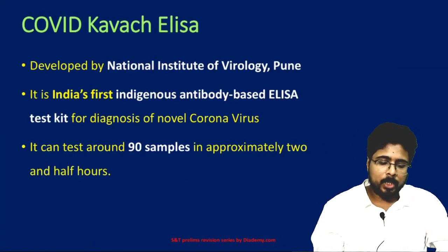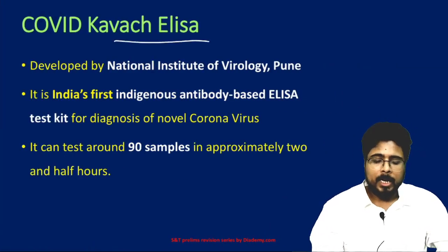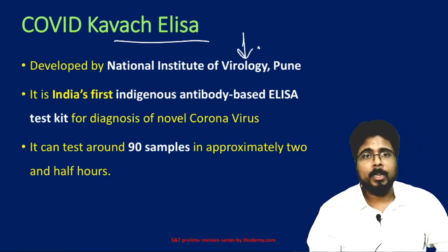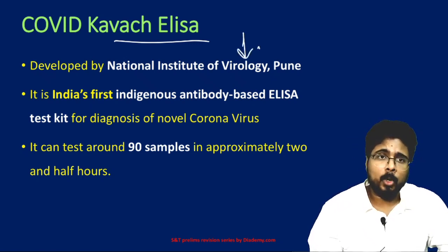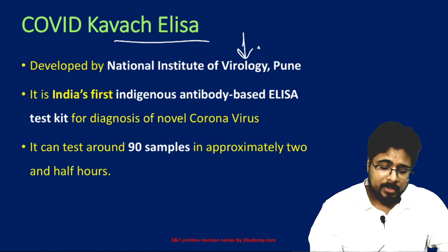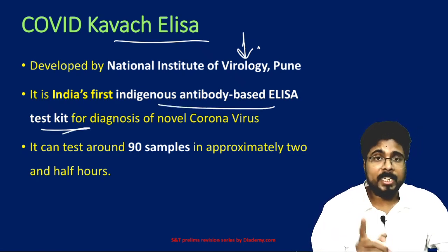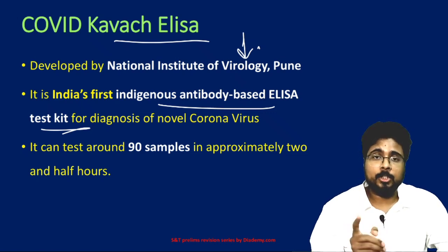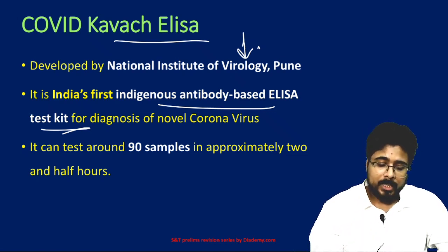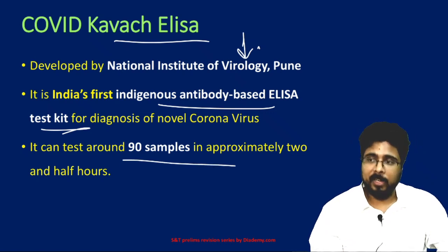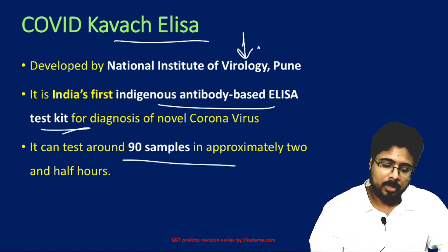Next, COVID KAVACH ELISA. It is developed by the National Institute of Virology, Pune. It is India's first indigenous antibody-based ELISA test kit. It can test around 90 samples in two and a half hours, making it a very fast test.